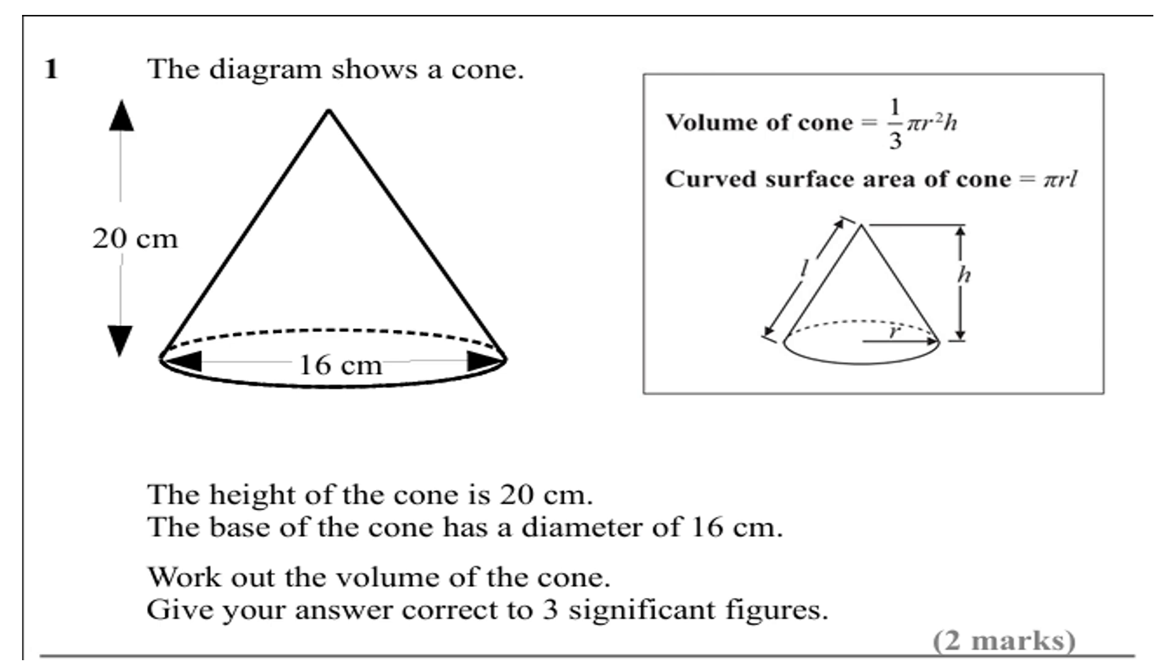Okay folks, in today's video we are looking at how to calculate the volume of a cone. We're going to be using this formula: volume of a cone equals one-third π r² h, where r is the radius and h is the height.